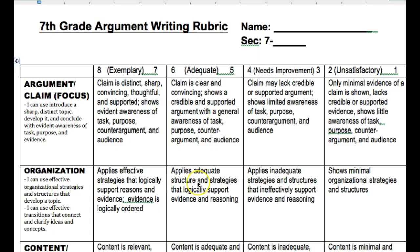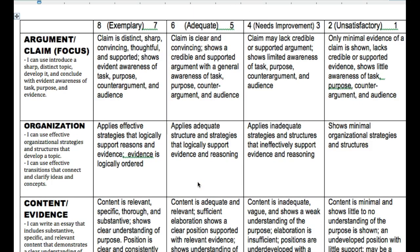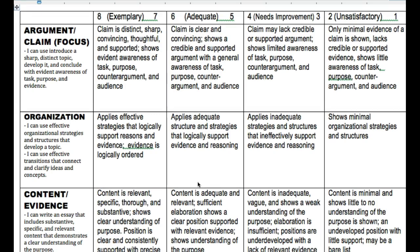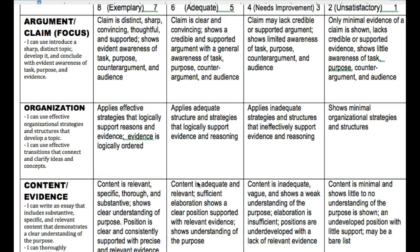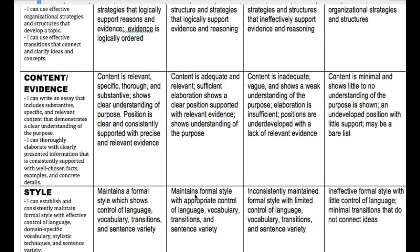We also have a rating rubric that will be used to grade your paper, along with the checklist. You can rip the rubric off from the front page and include it with your paper. Each category is worth eight points, and hopefully I'll be circling a lot on the left-hand side. The categories are: argument/claim, organization, content and evidence, style, and conventions. Leave lots of time for proofreading.